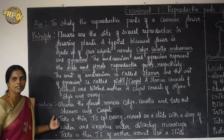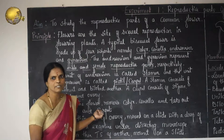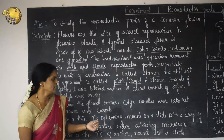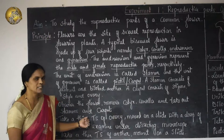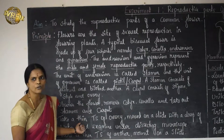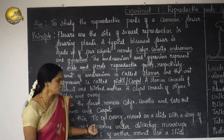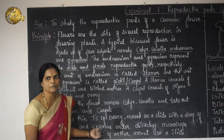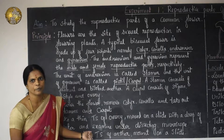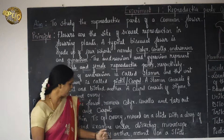The procedure involved in this experiment is: observe the flower — usually a hibiscus flower is given to you. Remove the Calyx and Corolla carefully and expose the stamens and carpels. Take a thin transverse section of the ovary, mount on a slide with a drop of water, and examine under the dissecting microscope. The dissecting microscope is also called a simple microscope.